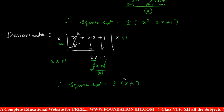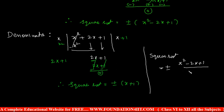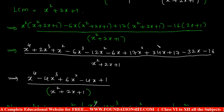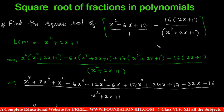Now we can write both together. Since we found numerator and denominator separately, the overall square root is plus or minus (x squared minus 2x plus 1) by (x plus 1). This is the square root for this fraction. Just simplify the question, convert into numerator by denominator, and take them separately — that is how to find the square root of fractions involving polynomials.